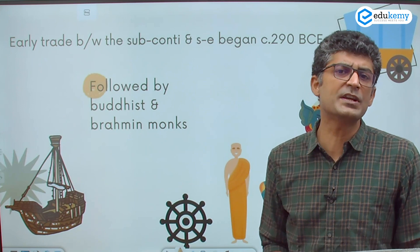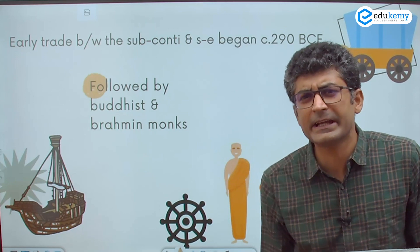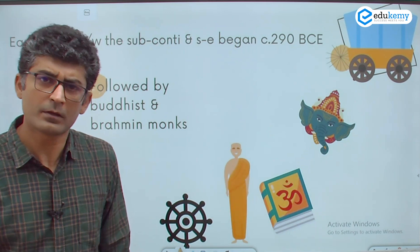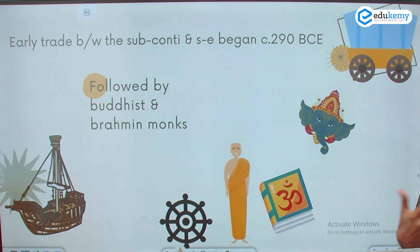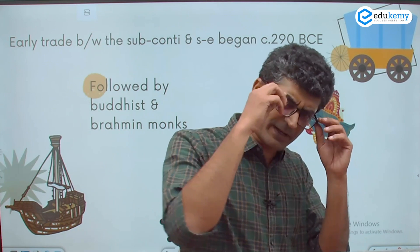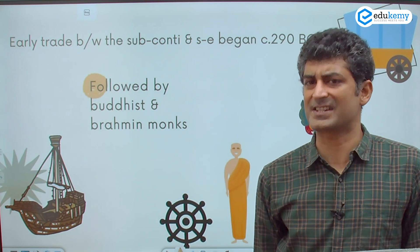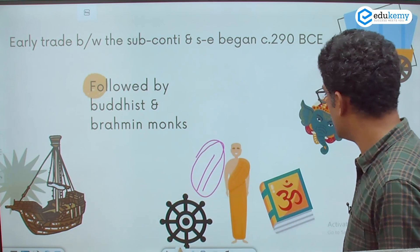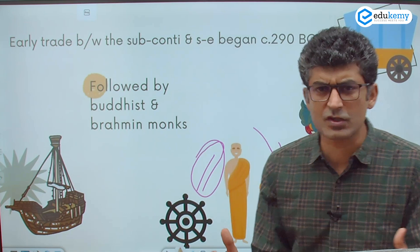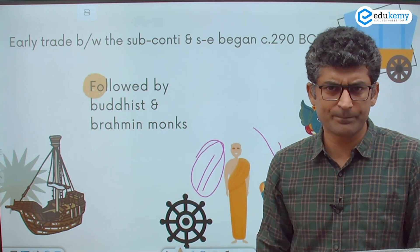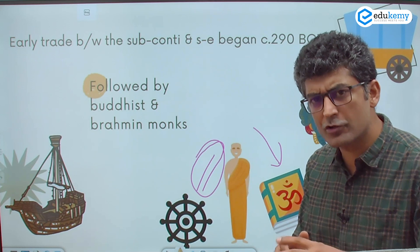Buddhist missionaries and Brahmanical missionaries also began going there. The Pallavas came in — they did not mind crossing the seas. While the rest of society had caste-based rules, Pallavas were okay with crossing the seas. From their times it simply moved to the next level. Buddhists took the Buddha's Dhamma, while the Brahmins took their books — the Shastras and all the Vedic literature, including literature that dealt with astronomy and astrology.